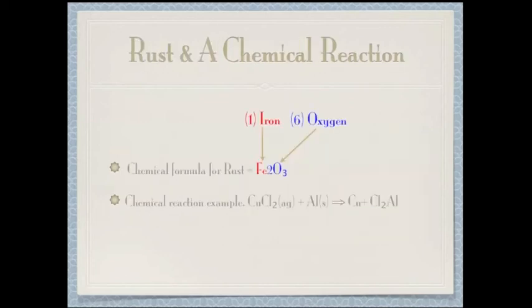Chemical formula for rust is Fe2O3. Chemical reaction example: CuCl2 plus Al becomes Cu plus Cl2Al.